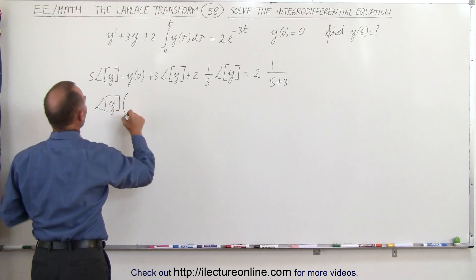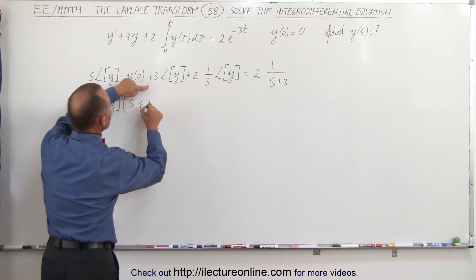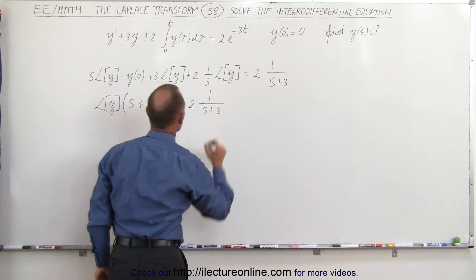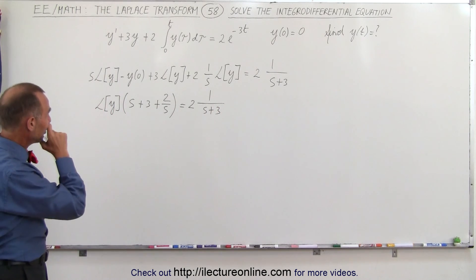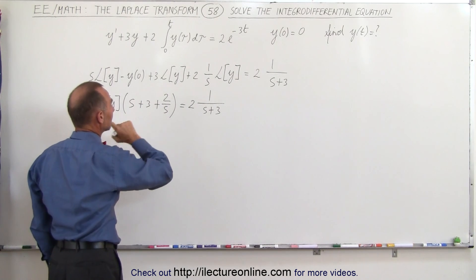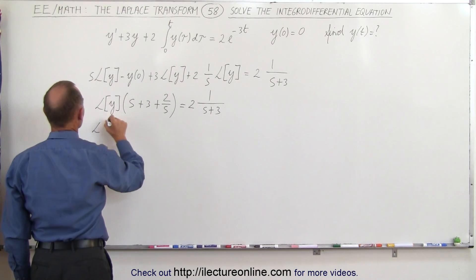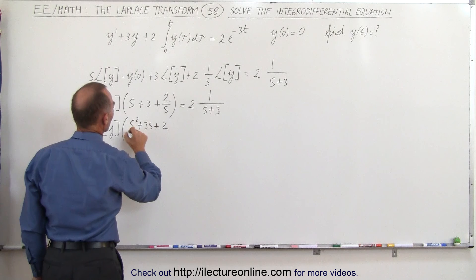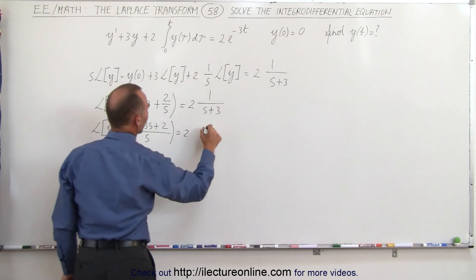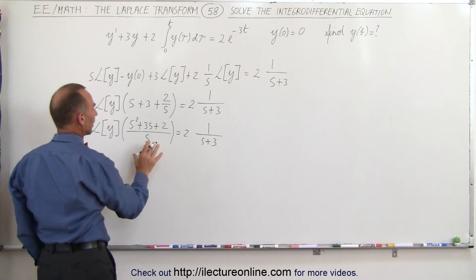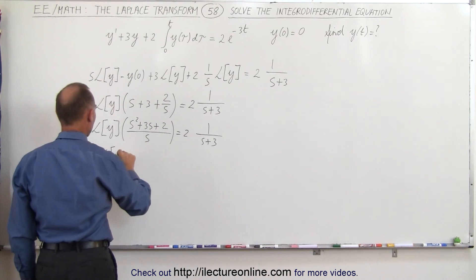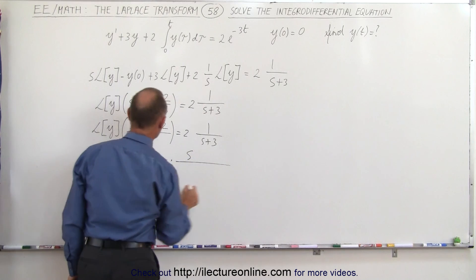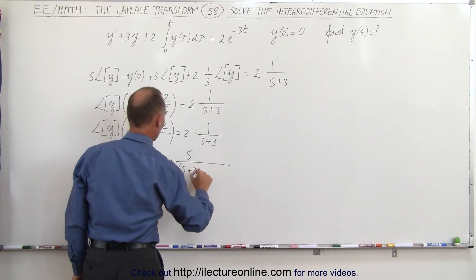With the initial condition going to 0, we get L{y} times (s plus 3 plus 2 over s) equal to 2 times 1 over (s plus 3). Writing over a common denominator, this becomes L{y} times (s squared plus 3s plus 2) divided by s, equal to 2 over (s plus 3). Solving for L{y}, we get 2 over (s plus 3) multiplied by s divided by (s plus 2)(s plus 1).